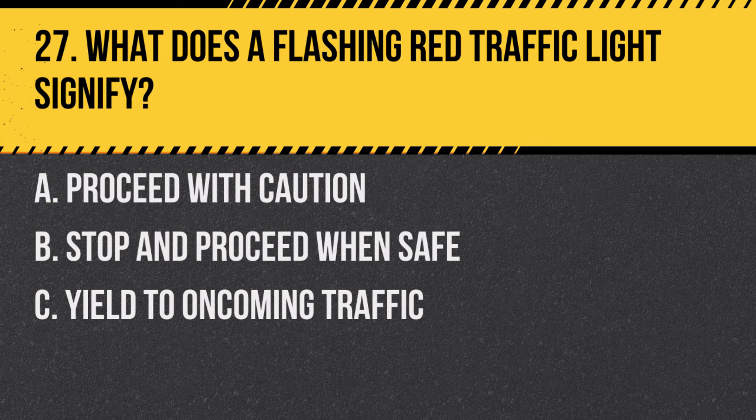Question 27: What does a flashing red traffic light signify? A. Proceed with caution. B. Stop and proceed when safe. C. Yield to oncoming traffic. Answer: B. Stop and proceed when safe. A flashing red light is treated as a stop sign — stop and proceed when it's safe.